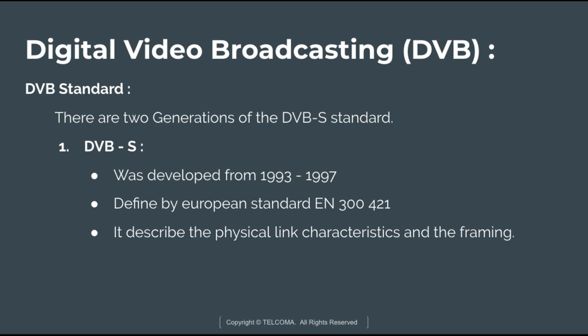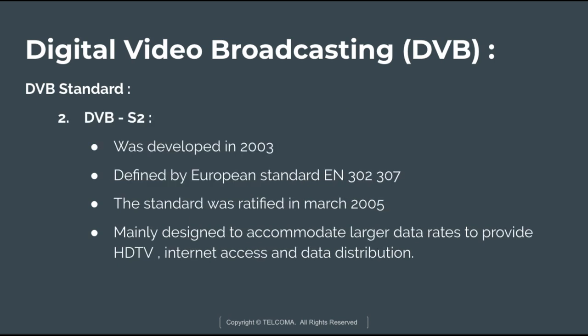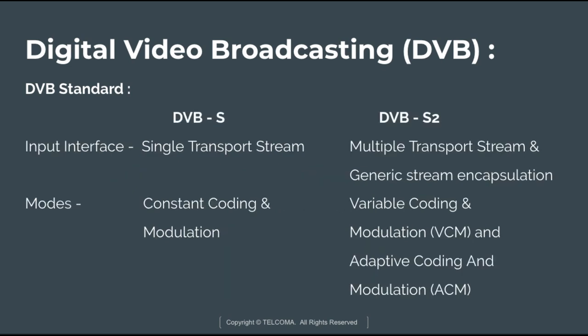There are two generations of DVB-S standards. The first is DVB-S, developed from 1993 to 1997, defined by European Standard EN 300 421, which describes the physical link characteristics and framing. Standardization was done by ETSI and the Digital Video Broadcasting Project. The second is DVB-S2, developed in 2003, defined by European Standard EN 302 307, ratified in March 2005. It was mainly designed to accommodate larger data rates to provide HDTV, internet access, and data distribution.